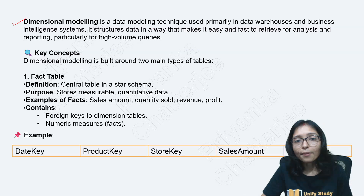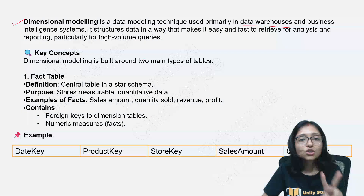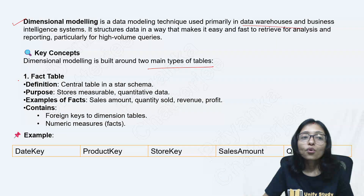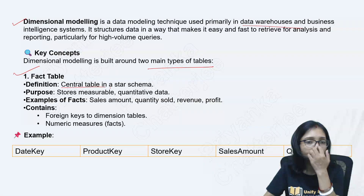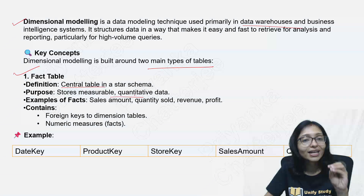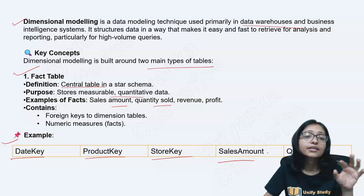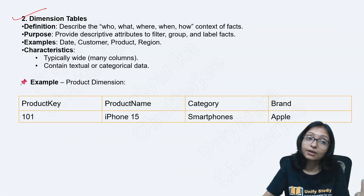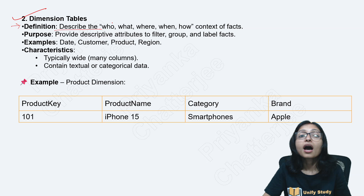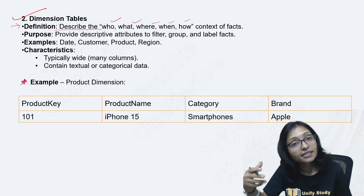Now, what is dimensional modeling? Dimensional modeling technique is primarily for data warehouses and it is divided into two main parts — two tables. One is called the fact table and another is the dimension table. The fact table is the central table where you store measurable or quantitative data, like sales amount and quantity sold. You can see columns like date key, product key, store key, and sales amount — these are numeric values, these are the quantitative measures. The descriptive dimension stores descriptions of who, what, where, when.